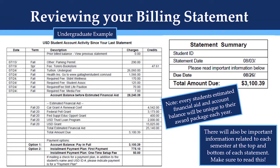For example, on this statement there is a credit for a bookstore charge of $47.61, which indicates that the student received a refund for that charge. This student also has an estimated financial aid award which brings the account balance down to around $3,000. Note that every student's estimated financial aid and account balance will be unique to their award package each year.